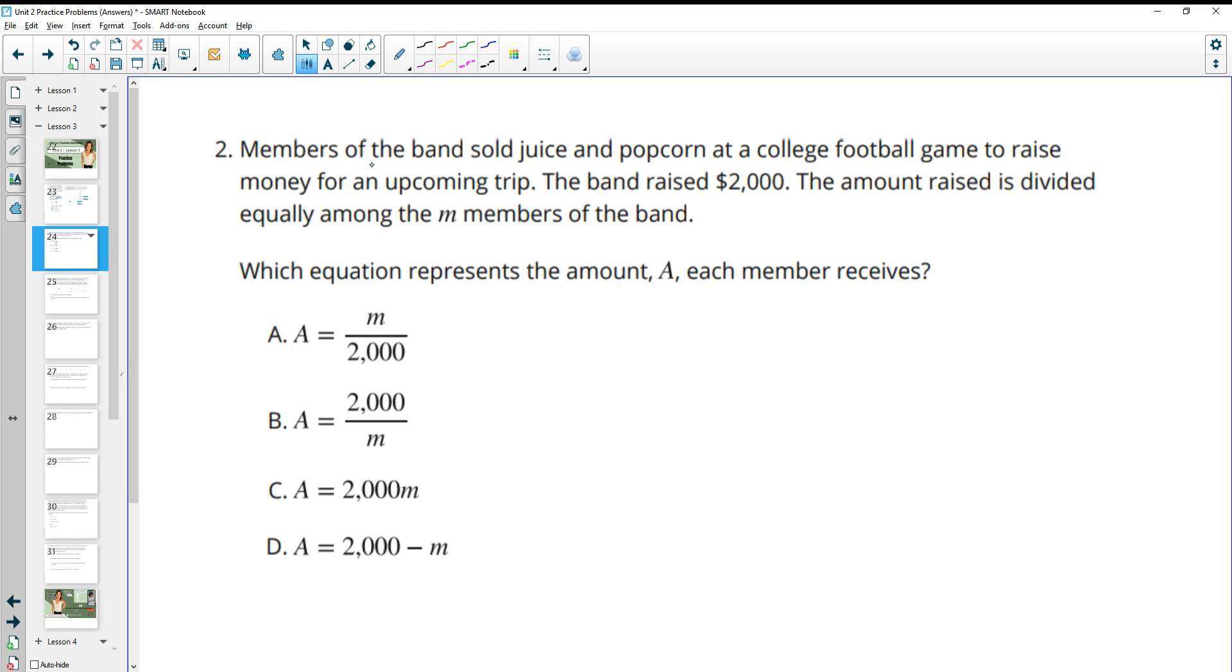Number two, members of the band sold juice and popcorn at a college football game to raise money for an upcoming trip. The band raised $2,000. The amount raised is divided equally among the M members of the band. So they take the 2,000 and divide it up equally among all of the members, which in this case we're calling M, and we see that as option B.